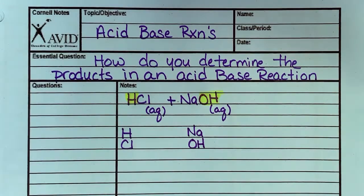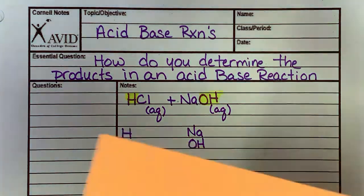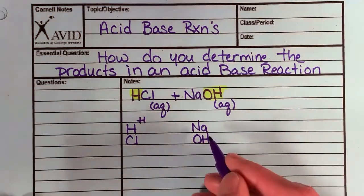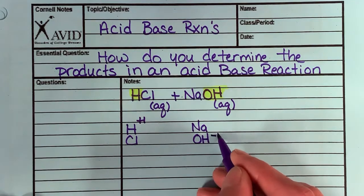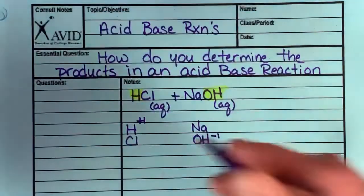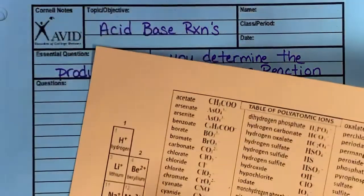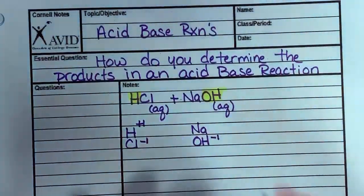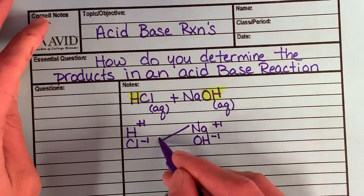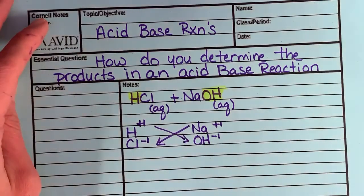Now just like with precipitation reactions, I need to check charges. So I look on the periodic table. H as a cation is always a plus one. OH as an anion is always a negative one. Cl as an anion is a negative one. And Na as a cation is a plus one. So just like with precipitation reactions, double displacement, two things trade places. I keep my positive with a negative.